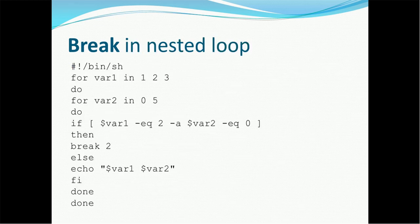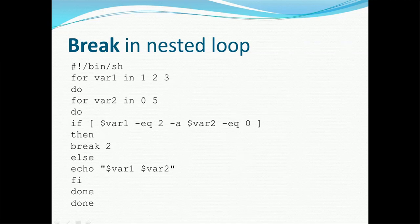This is another example of break statement in a nested loop — if you have a loop within a loop, how will the break statement work? For example, we have a for loop with variable one containing values 1, 2, 3. Inside that we have another for loop for variable two in 0 and 5. Then we are performing some execution: if variable one equals 2 and variable two equals 0, then break — else echo variable one and variable two.